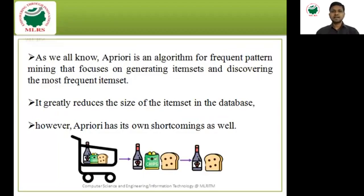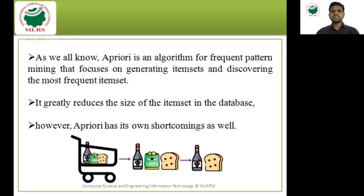In my previous class on the Apriori algorithm, I took one example with nine transactions. For nine transactions, finding a frequent itemset may not get any problem. Apriori focuses on generating itemsets and discovering the most frequent itemset — for example, if you purchase milk, you will also purchase bread, and along with milk and bread you sometimes purchase butter. These are called frequent itemsets.